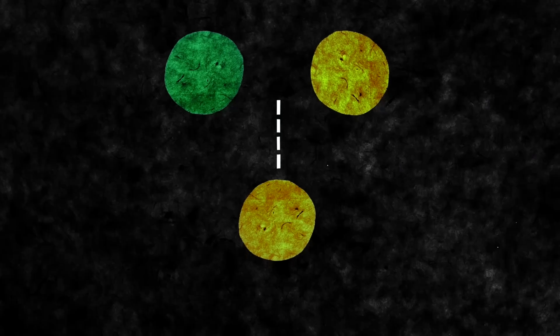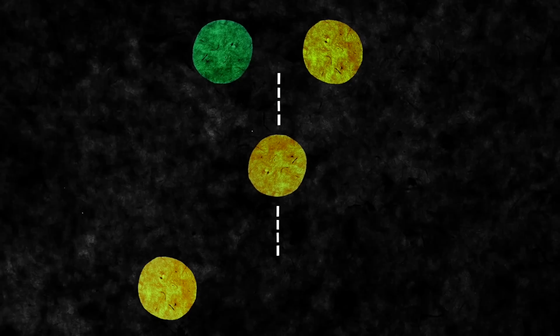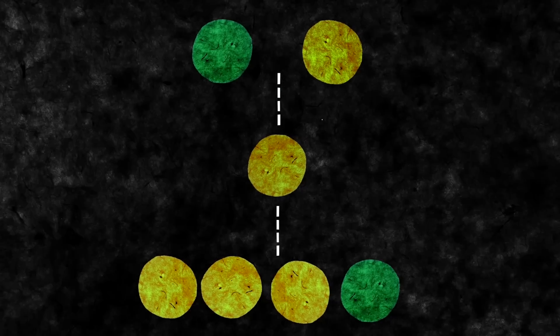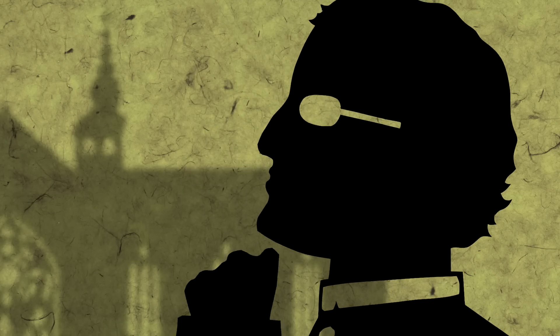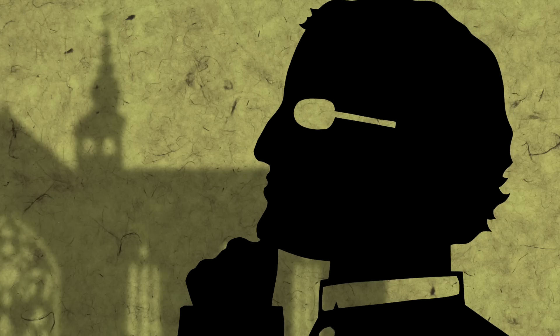However, when he allowed that generation to self-pollinate, he found a second generation of yellow and green. The green peas were back, but there were nearly three times as many of the yellow. Mendel speculated that the yellow color was dominating.